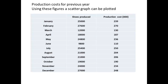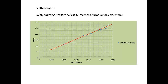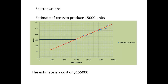Solely Yours also has figures for production from the previous year, and these can be used to estimate production costs. The production costs from the previous year can be used to plot a scatter graph, and the best straight line can then be drawn through these points. Using the scatter graph, we can estimate production costs for 15,000 units. Using this graph, the estimate is for production costs of $155,000.